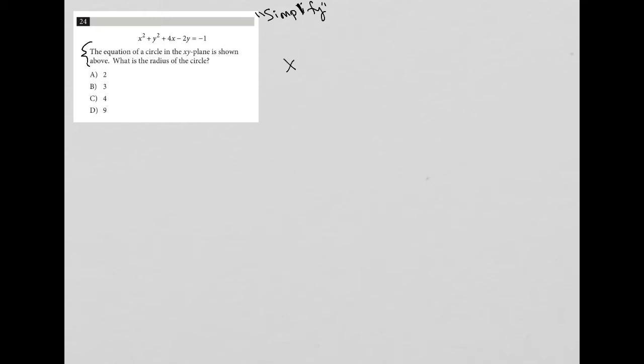So what do I have here? I have x squared plus y squared plus 4x minus 2y equals negative one. And the question says the equation of a circle in the xy plane is above. Okay, so this is a circle equation. What is the radius of the circle? So I want to figure out what r is.